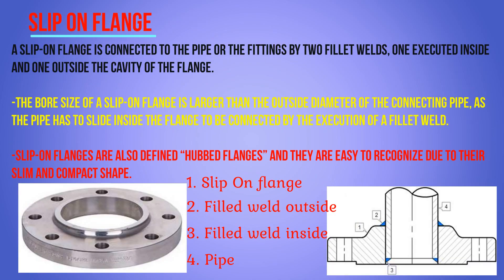The slip-on flange is connected to a pipe or fittings by two fillet welds — one executed inside and the other on the outside cavity of the flange. In the picture, point one is the slip-on flange, point two is the fillet weld outside, and point three is the weld inside. The bore size of a slip-on flange is larger than the outside diameter of the connected pipe, as the pipe has to slide inside the flange.